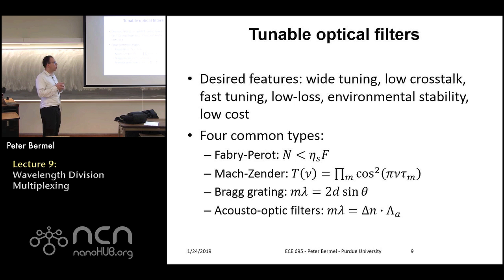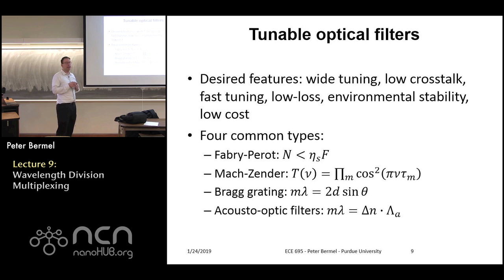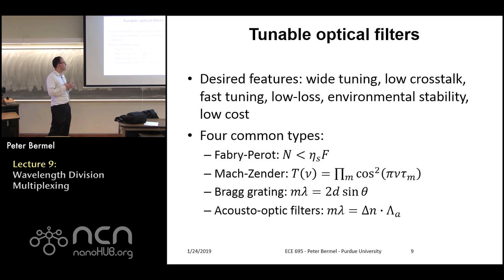For a tunable optical filter, there are a lot of desired properties. Of course, tuning itself is non-trivial. You also need low crosstalk — meaning it's highly selective, tuned to your wavelength but not reflecting others. You want it to be fast, low loss so you don't need to re-amplify the signal, stable with respect to the environment so temperature, humidity, and other factors don't cause problems, and of course on top of all that, you want it to be cheap.